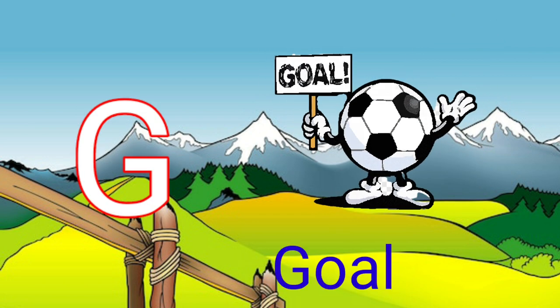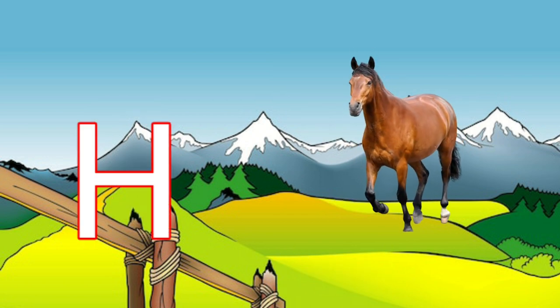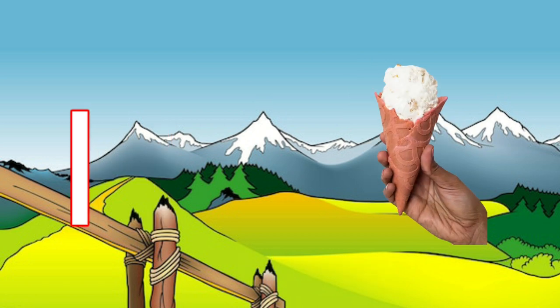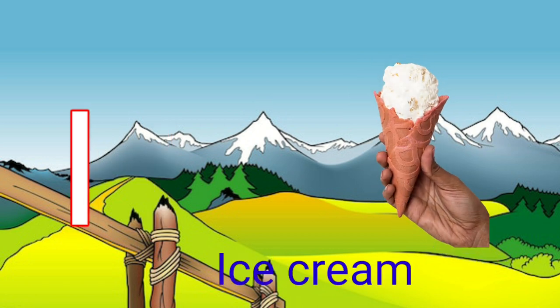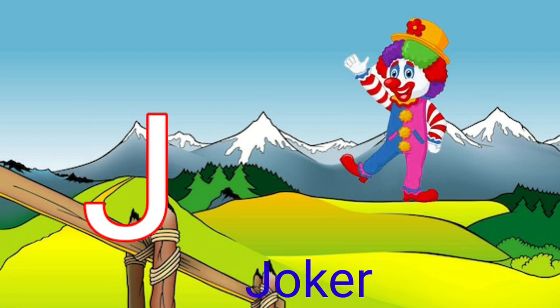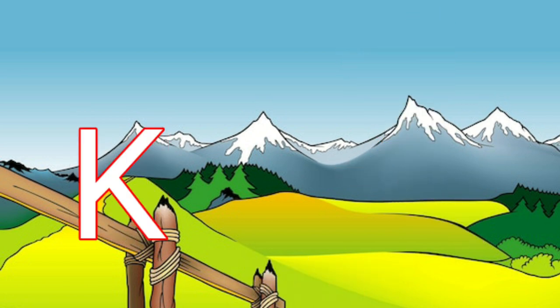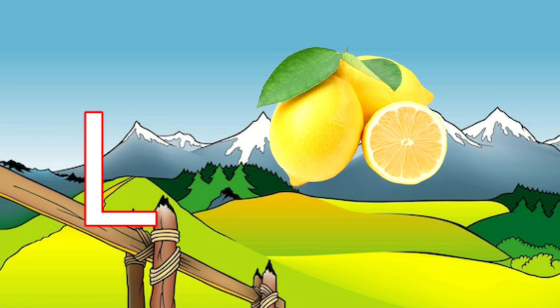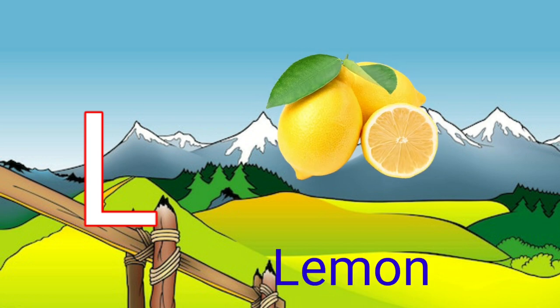G for girl, H for horse, I for ice cream, J for joker, K for king, L for lemon.